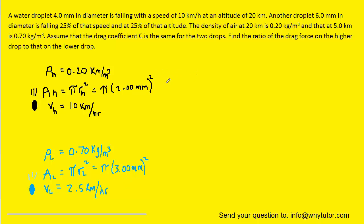And the reason we bring this all up is because the drag force acting on these drops can be described by the following equation. We have the drag force equal to 1/2 times a drag coefficient C times the density of air times the area of the object that's falling times the speed of the object squared.